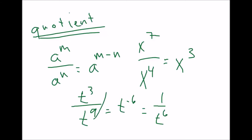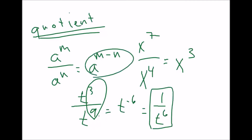You could also just look at it and see there are 6 more t's in the denominator than the numerator, so you're left with 6 t's on the bottom. Following the formula, you subtract 3 minus 9 to get negative 6, then move it to the bottom.